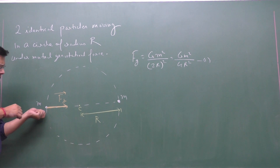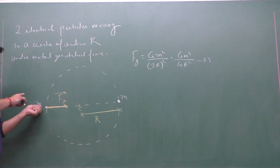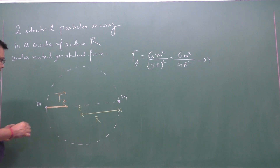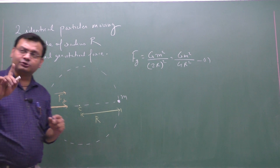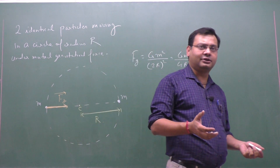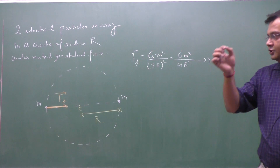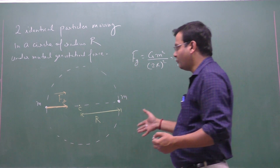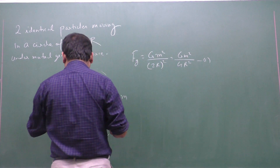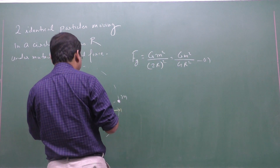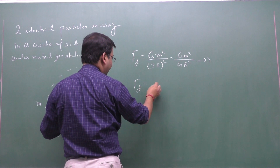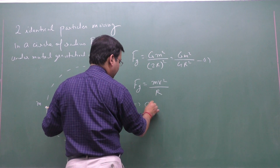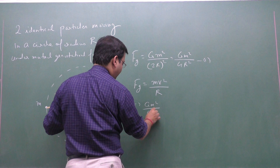The net force on this particle is directed towards the center of the circle, with no tangential component. Since there is no tangential component, the particle will follow uniform circular motion — it will move in a circle with constant speed. The net force FG provides the centripetal force, so G·m²/4R² = mv²/R.